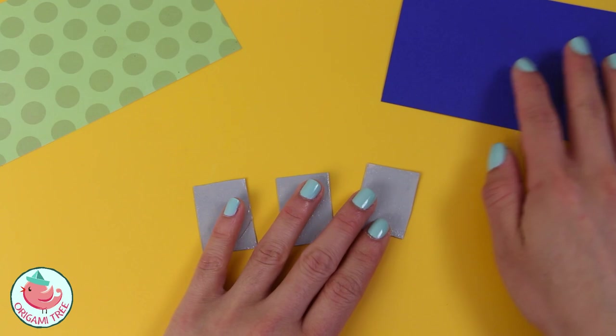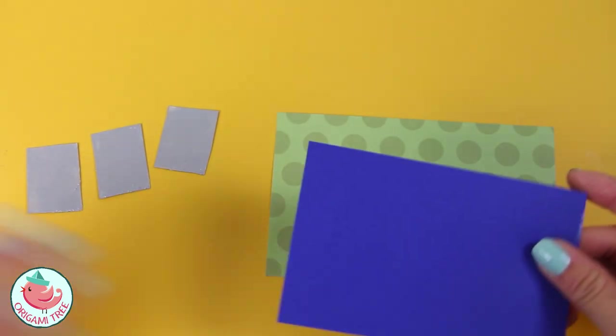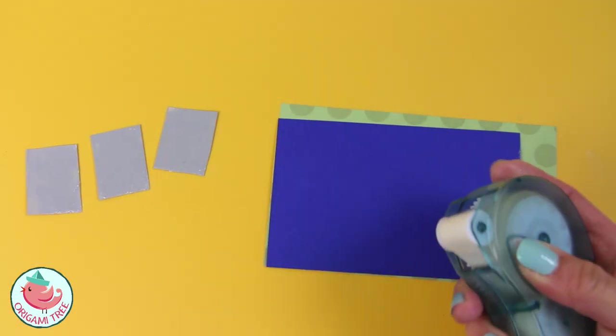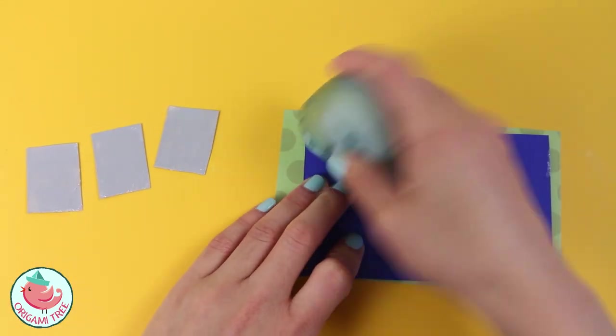So once the paint is all dried, you're ready to create your actual scratch off ticket. So I'm going to do that by taking my glue dots and the blue cardstock and I'm going to place a couple of glue dots here, one on each corner.